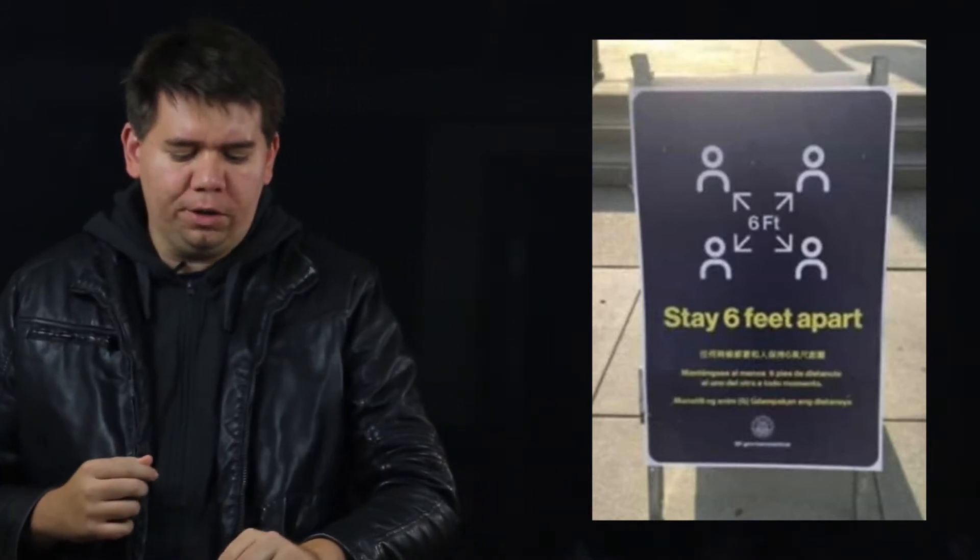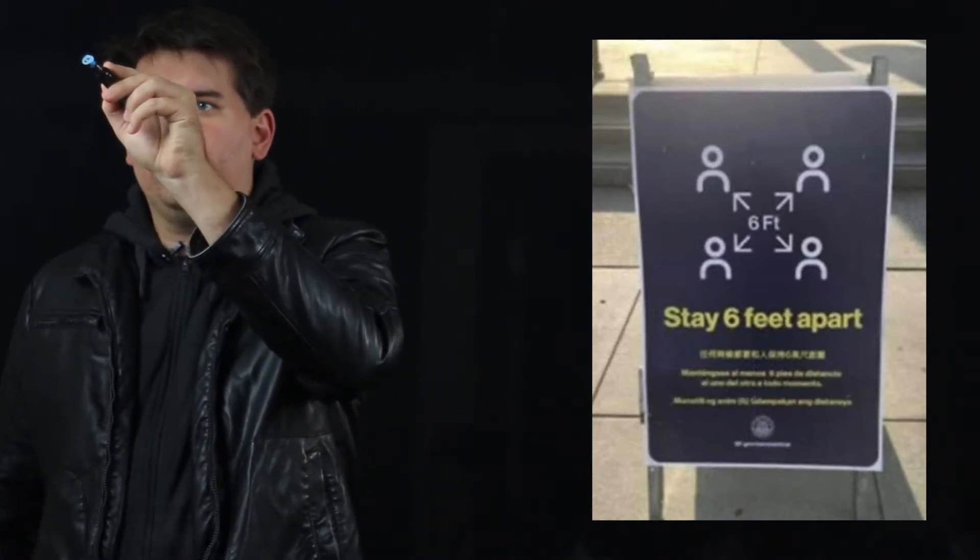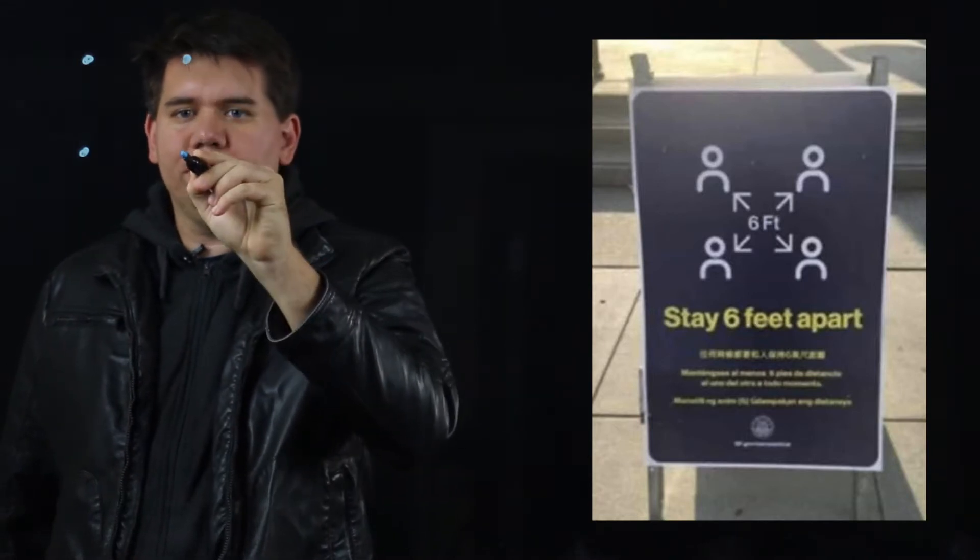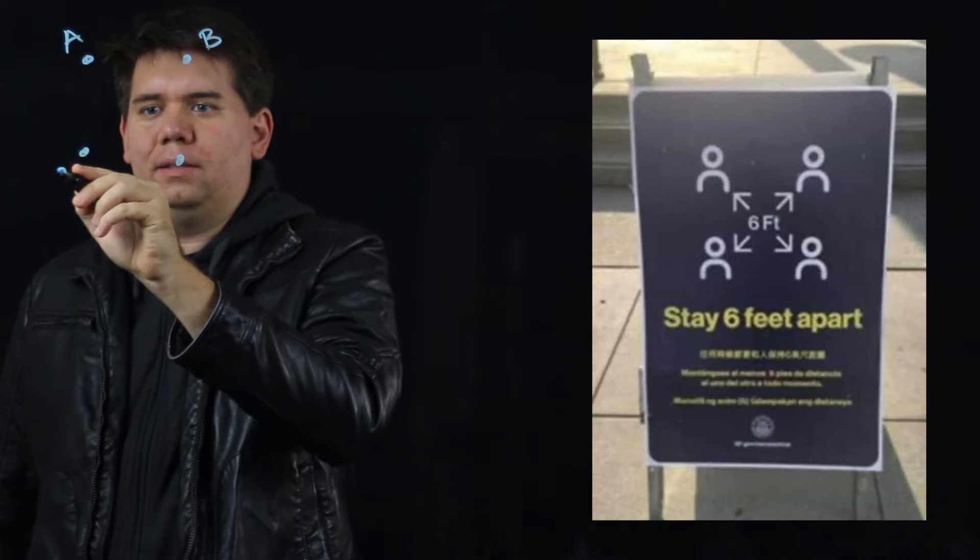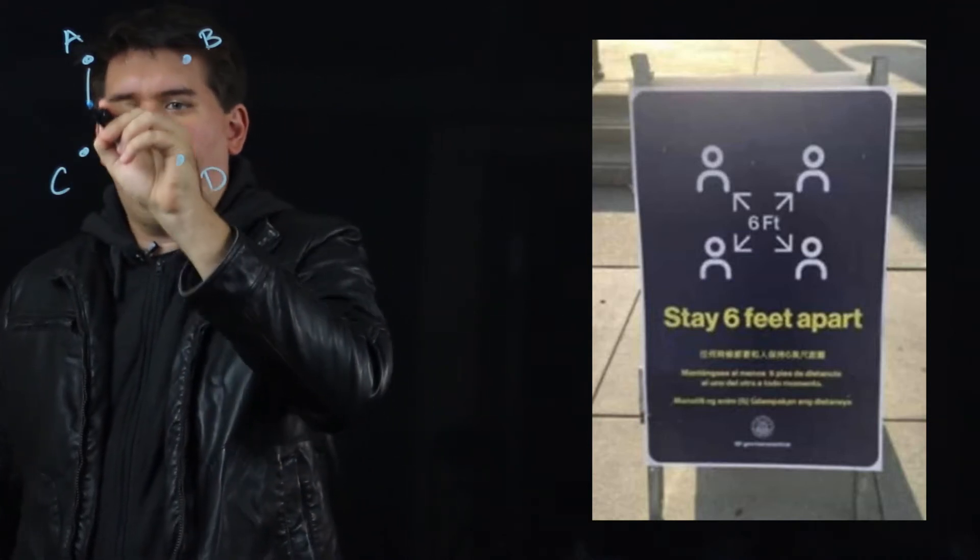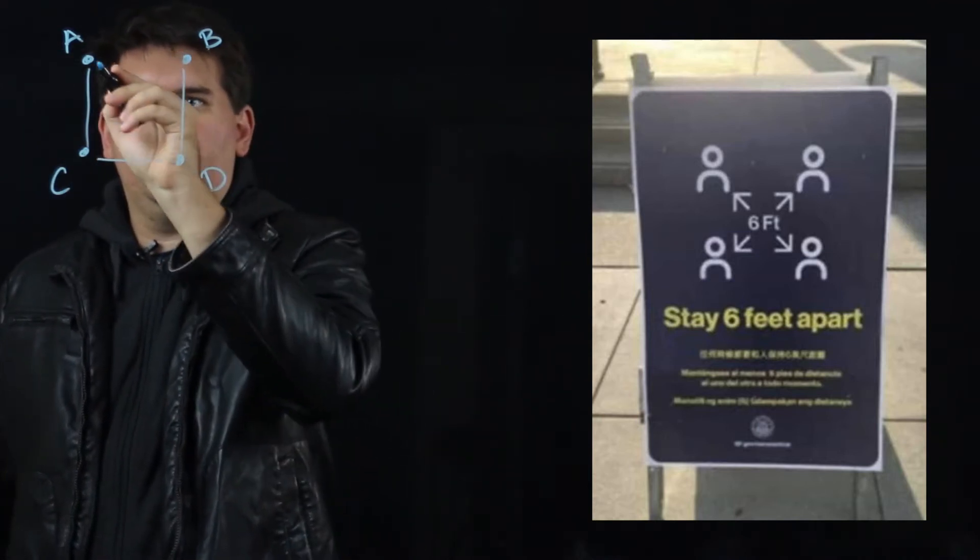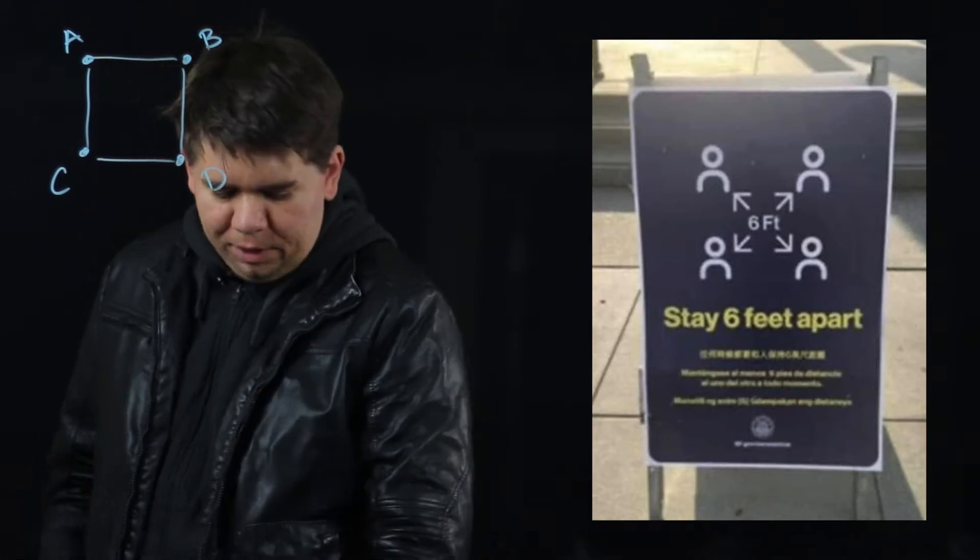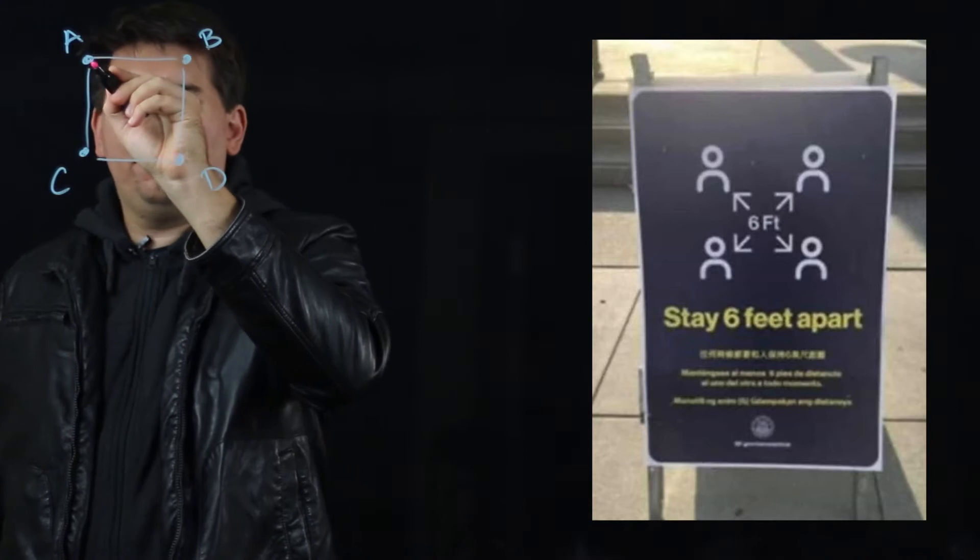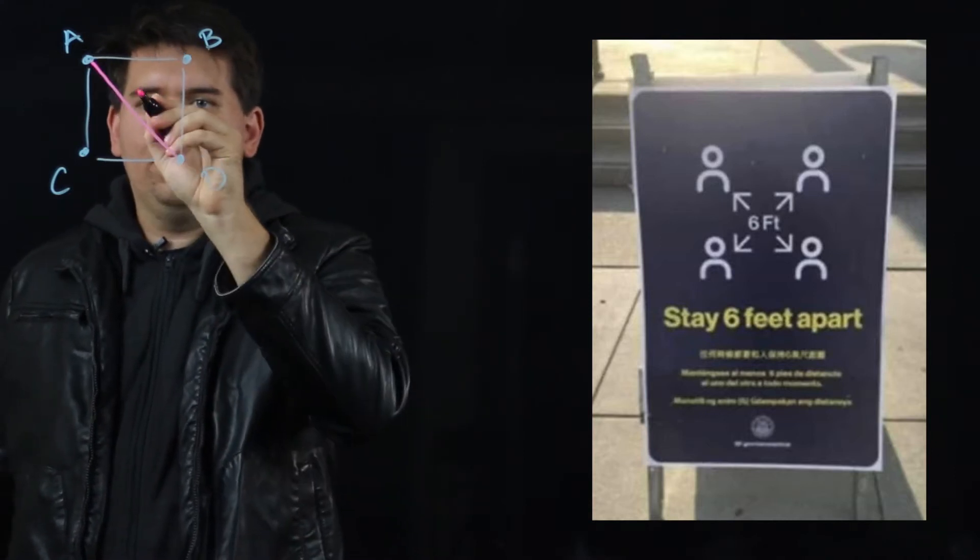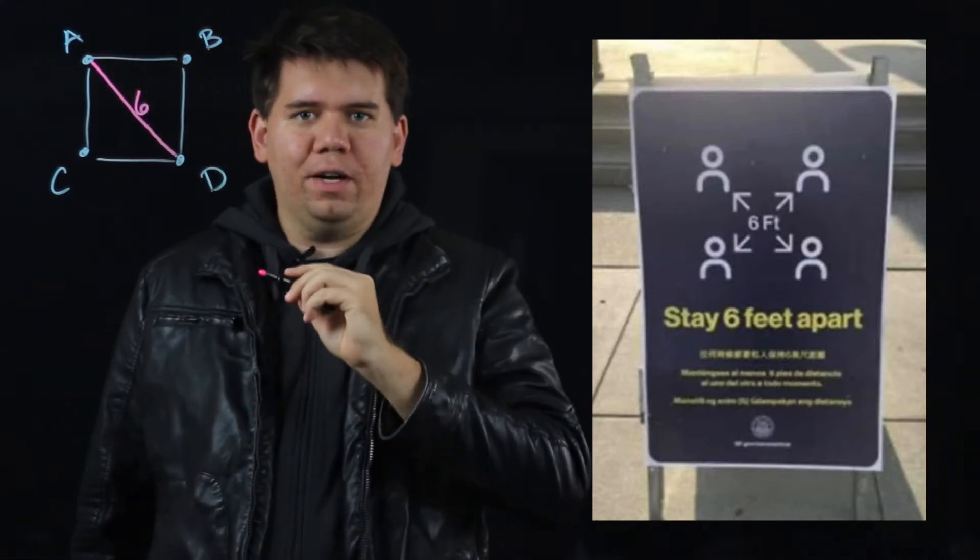Let's take a closer look. If you have four individuals arranged in the shape of a square, let's call them person A, B, C and D forming a square. And if we insist that those in opposite corners stay six feet away from each other, so in particular A and D are six feet away from each other.